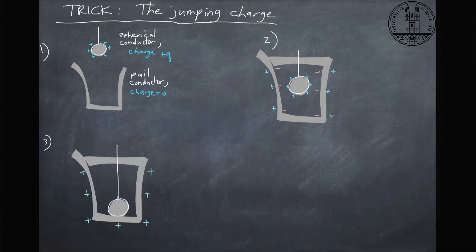Now in step three when we make contact between the sphere and the inside of the pail, these charges on the inside cancel out and now we're left with charge only on the outside. So when we take our sphere out we find that it has zero charge and the pail now has all of the charge that the sphere used to have. Let's have a look and see if we can do this in real life.